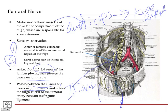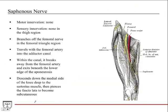Then it enters the thigh lateral to the femoral artery. For the femoral triangle, remember: nerve, artery, vein, empty space, lymphatics. So it enters lateral to the femoral artery beneath the inguinal ligament and enters the femoral triangle.